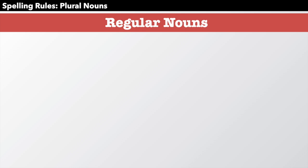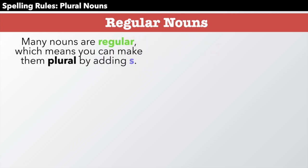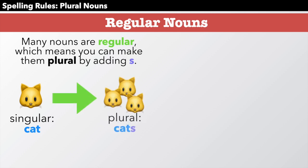Regular nouns. Many nouns are regular, which means you can make them plural by adding s. Singular, just one cat. Plural becomes cats with just an s. That's easy.